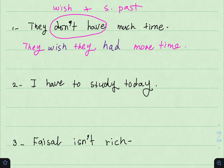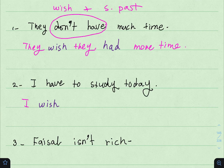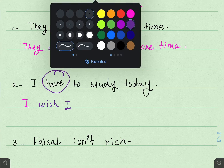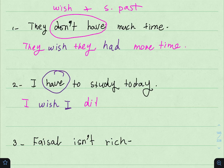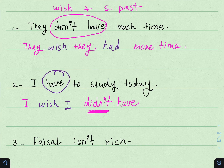Now the second sentence: 'I have to study today.' طبعاً هنا it is affirmative, فراح تكون negative في التخيل. So you say: 'I wish I didn't have to study.' طبعاً بعد didn't دائماً الـ basic form. I wish I didn't have to study.